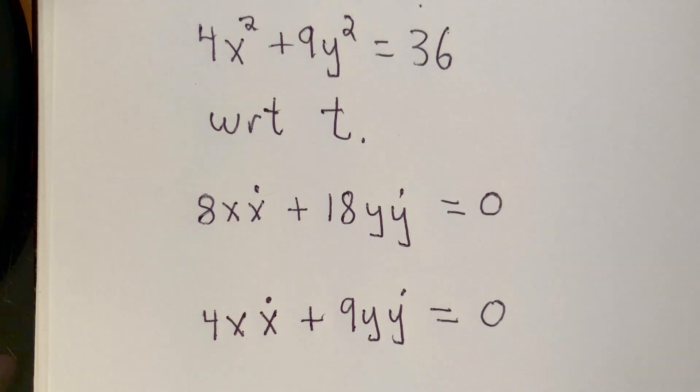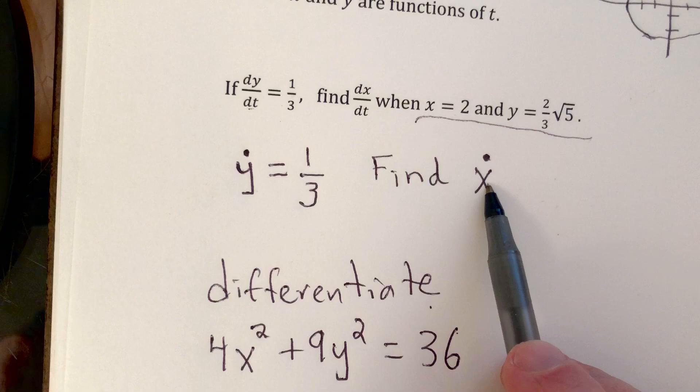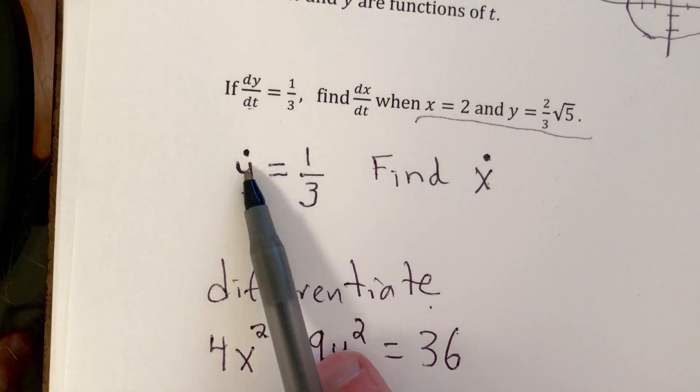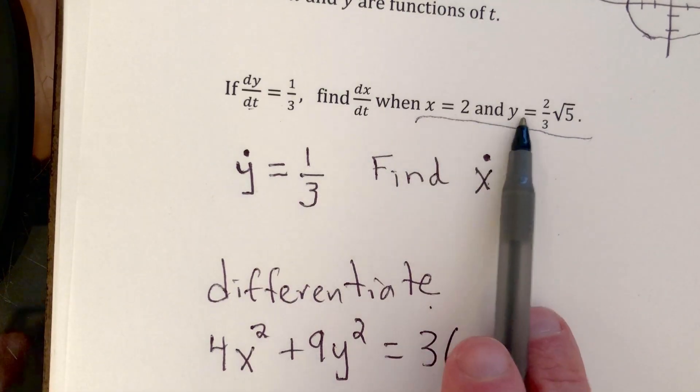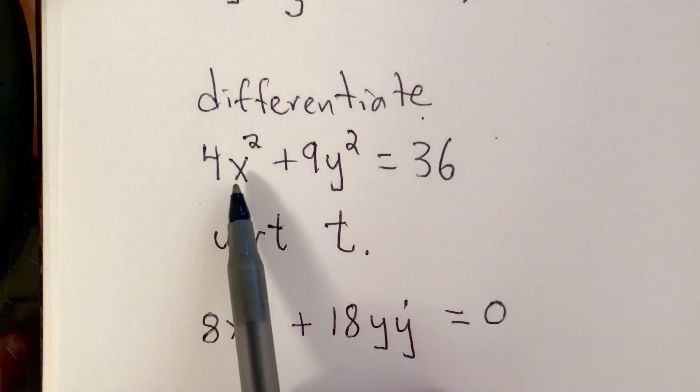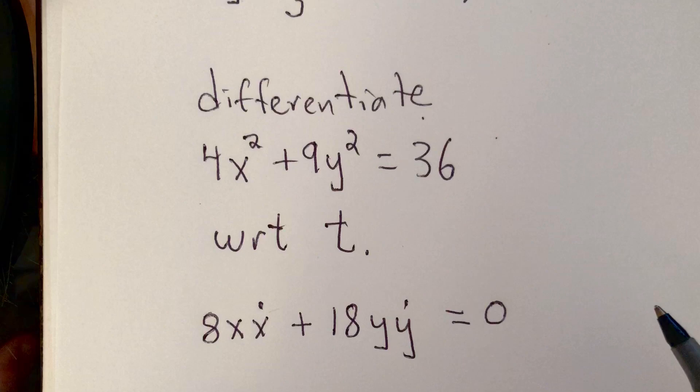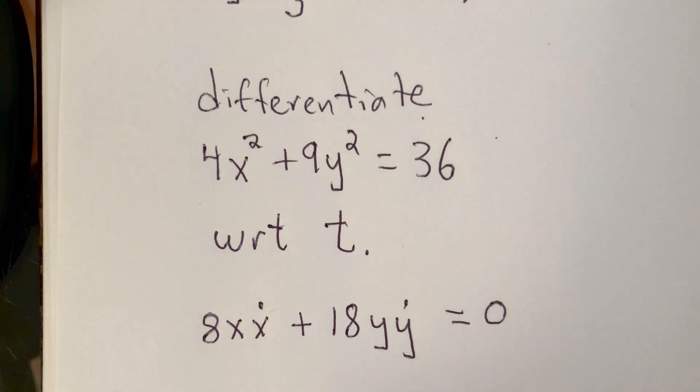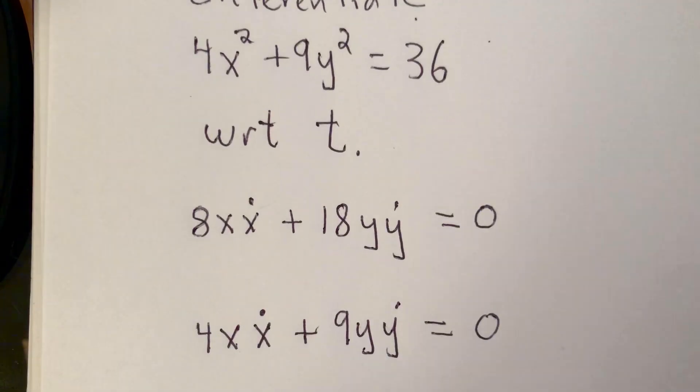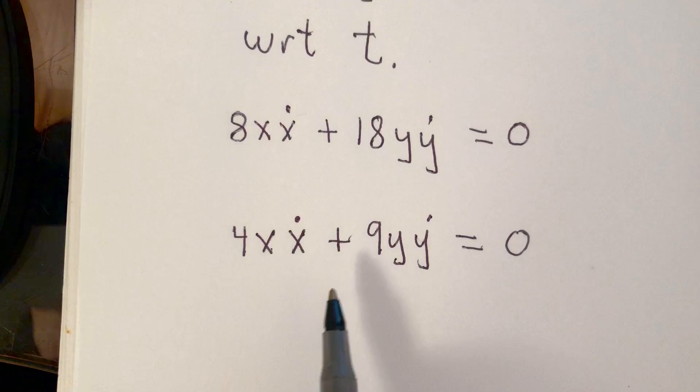Now, what were we asked for again? We were asked to find x dot when y dot is 1 third and x and y have these values. So you should notice that from our equation, there are actually four things here. We have x, x dot, y, and y dot. We're given three of them, and we're asked for that piece that is missing, which in this case is x dot.